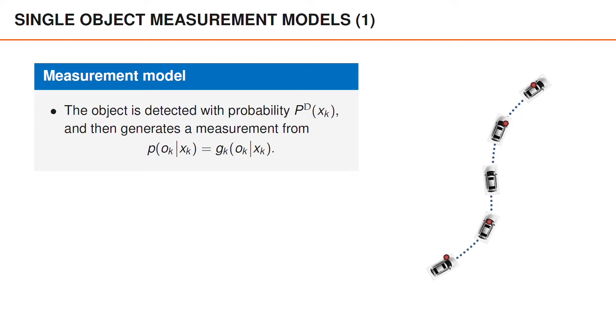Let us now look at the single object measurement model, that is, the model that we will use to describe the distribution of the object detections from a single object. Note that this is not the complete measurement model, since we also need a model for the clutter detections. However, in this video and the next, we will ignore clutter detections, and instead focus on the object detections.